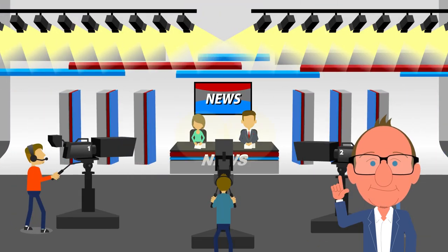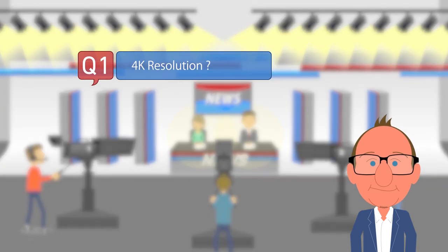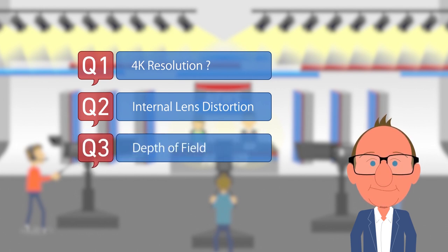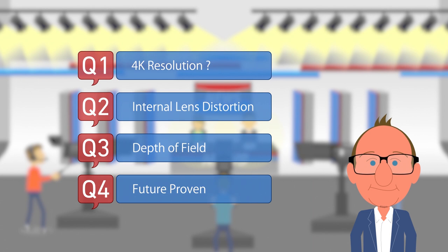We get some common questions. Q1: Did we really get good 4K resolution? Q2: Did our internal optics introduce new distortion? Q3: What about depth of field? Is it shallow like a cinema camera? Q4: Is this a one-off solution or a new approach we can move into the future with?